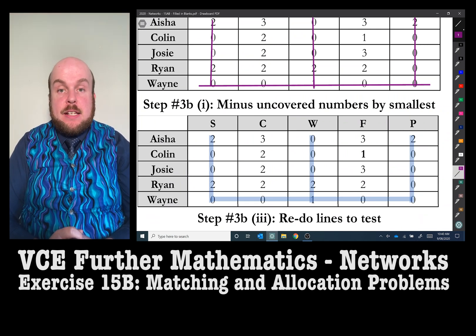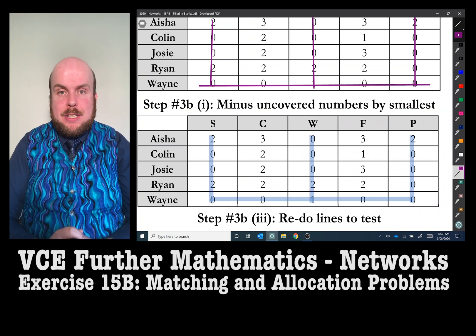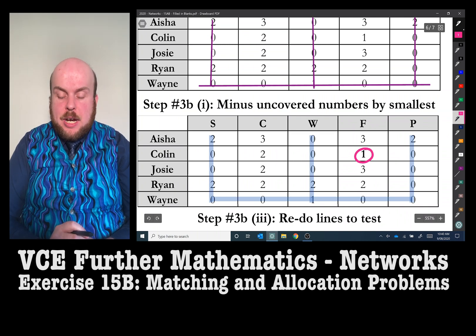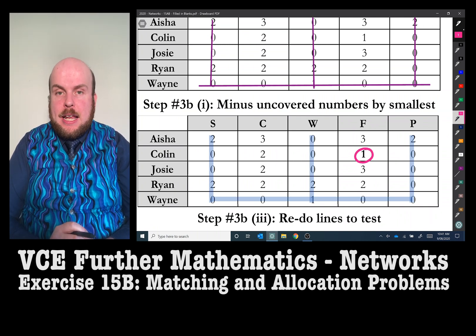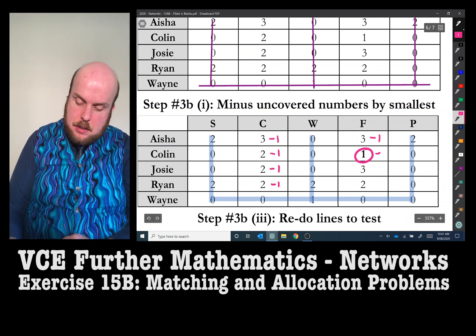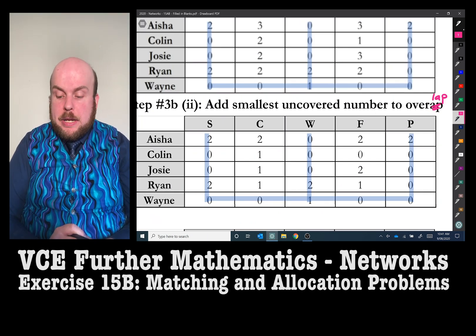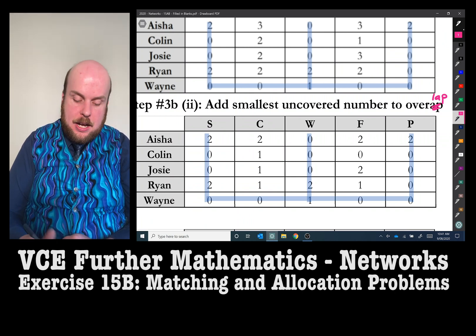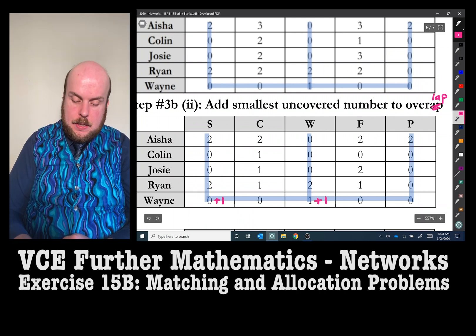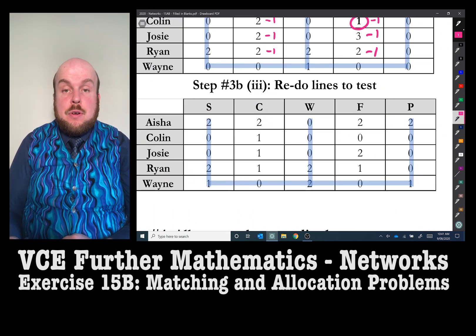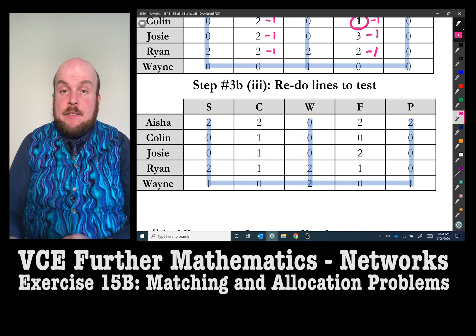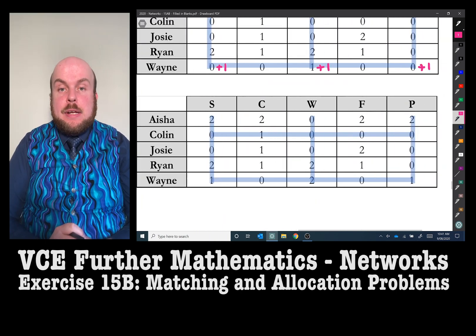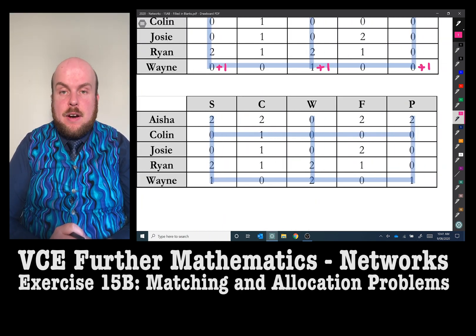So the next step is to find out of all the uncovered numbers, identify the smallest number. In this case, it's the number 1. We then subtract all of the other uncovered numbers by that number 1. Then we take that smallest number we identified earlier and add it to any numbers that have been overlapped by lines. Once we do that, we now need to go and redraw the lines to see if we have got 5 for our 5x5 grid. And as you can see, we now have our 5 lines for our 5x5 grid.